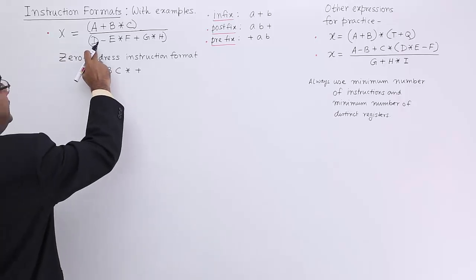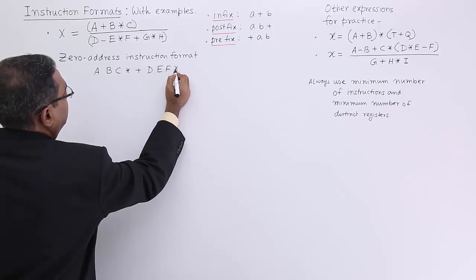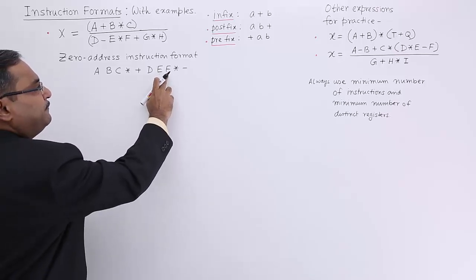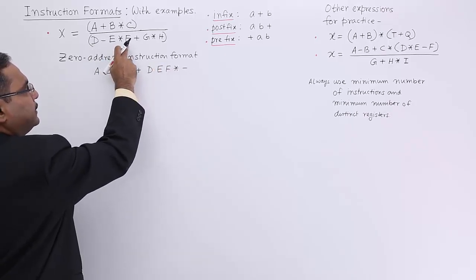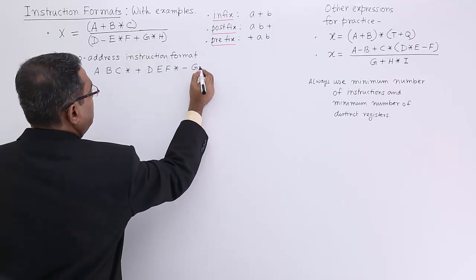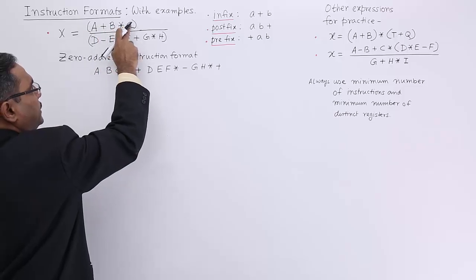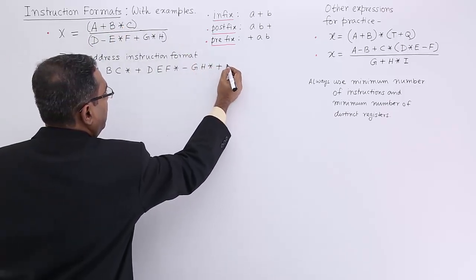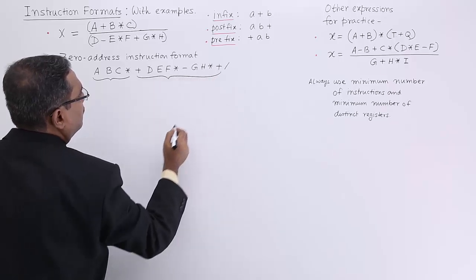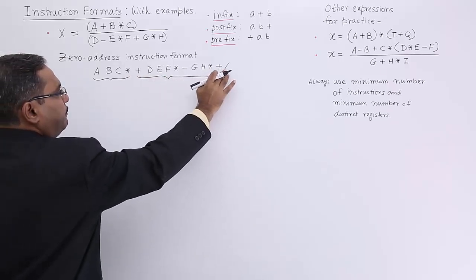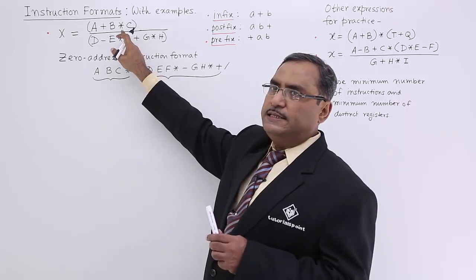For the denominator, d - e * f becomes: d e f * -. Because e f * means e * f, and d result - means d - result. The last part is g h *, and the + comes afterwards. The full expression is numerator divided by denominator, so the division operator comes at the last. In this way I have written the full postfix expression.